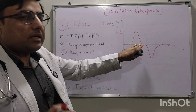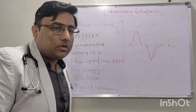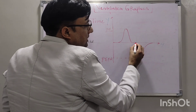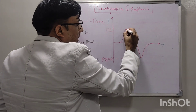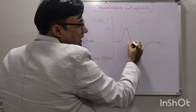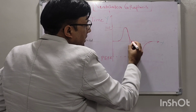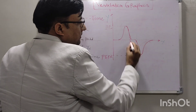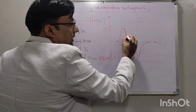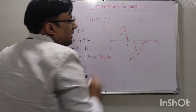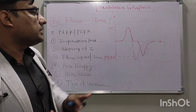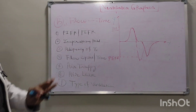By the inspiratory hold we can assess the adequacy of inspiratory time. If the inspiratory hold is prolonged, the I-time is excessive and we can decrease it. If there is no inspiratory hold and the expiratory flow starts without returning to the baseline, it means the I-time is too short — the flow is not coming down to the baseline before expiration begins — and we can increase the inspiratory time.